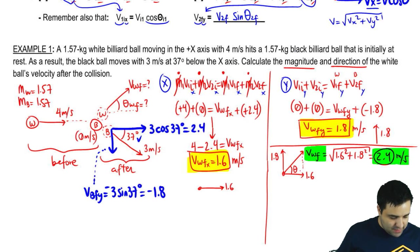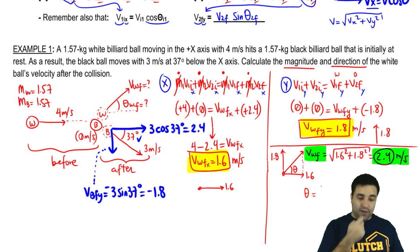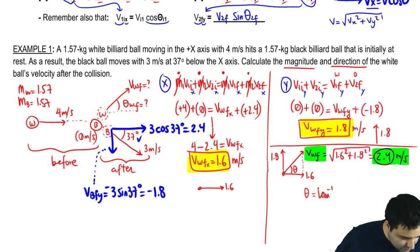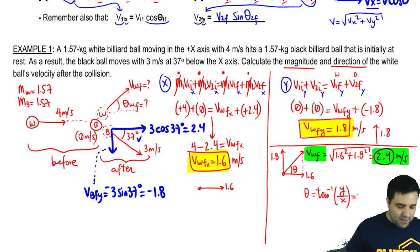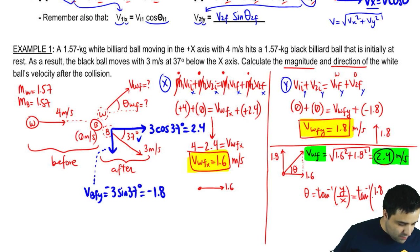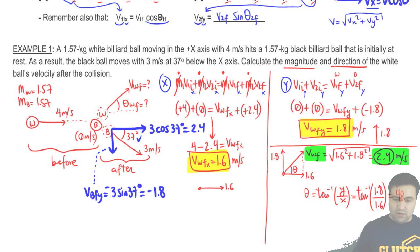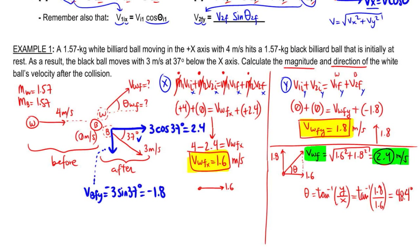The second answer is pretty quick. It's theta. Theta, I hope you remember, if you have the two sides of the triangle, theta is just the arc tangent of the y side divided by the x side. So this is going to be the arc tangent, y is the height, 1.8. This is 1.6. Make sure your calculator is in degrees. And the answer you get is 48. 48.4 degrees.